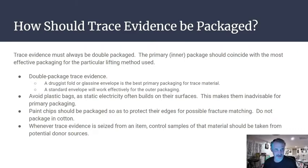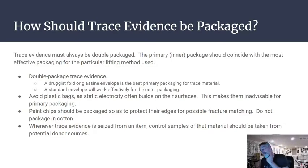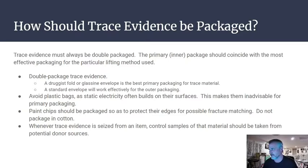Trace evidence must be double packaged. The primary inner package should match the most effective packaging for the lifting method. A druggist fold, also called a chemist fold or bindle, can hold the trace material, and a standard envelope works for outer packaging with chain of custody information. Avoid plastic bags because static electricity builds up on their surfaces. Paint chips should be packaged so edges are protected from fracture. Whenever trace evidence is seized, control samples from potential donor sources should also be taken.